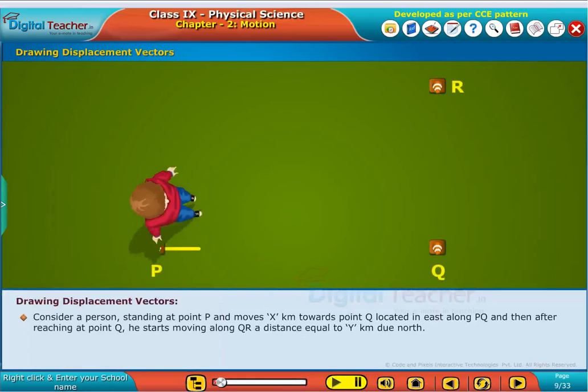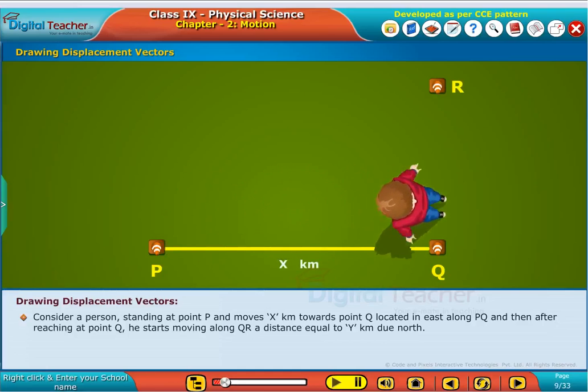Consider a person standing at point P and moves X kilometers towards point Q, located in east along PQ, and then after reaching at point Q, he starts moving along QR a distance equal to Y kilometers due north.